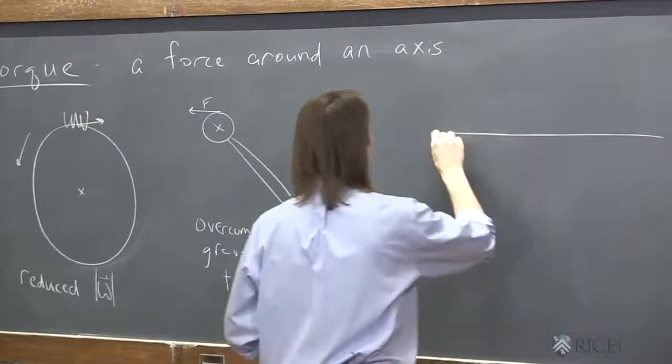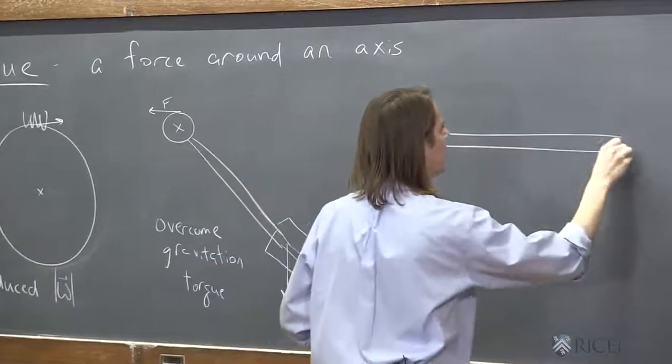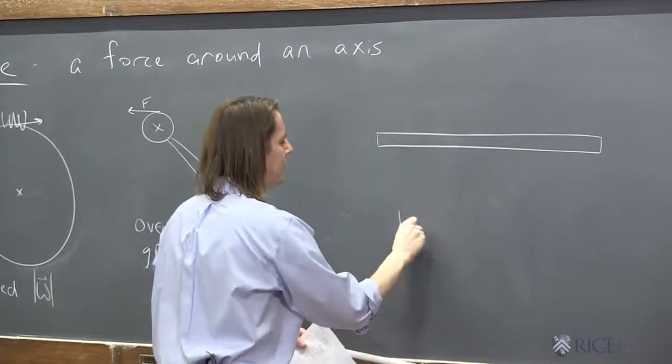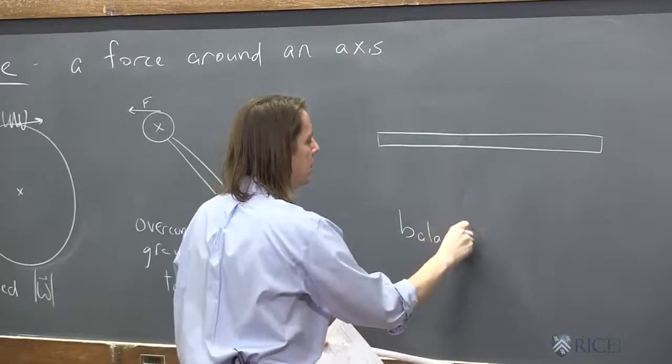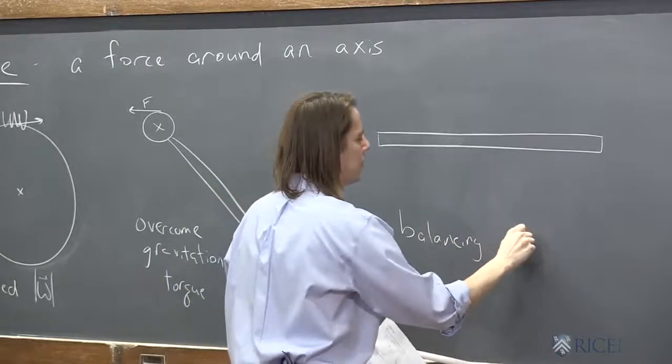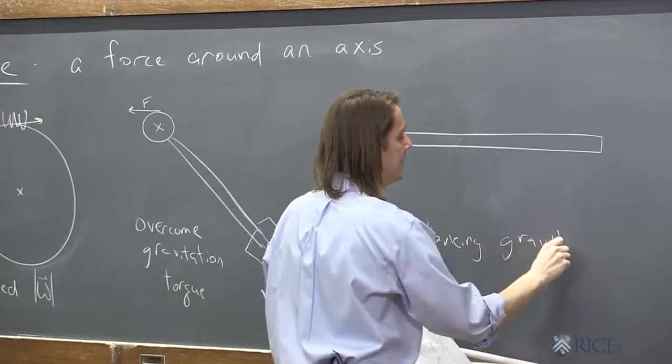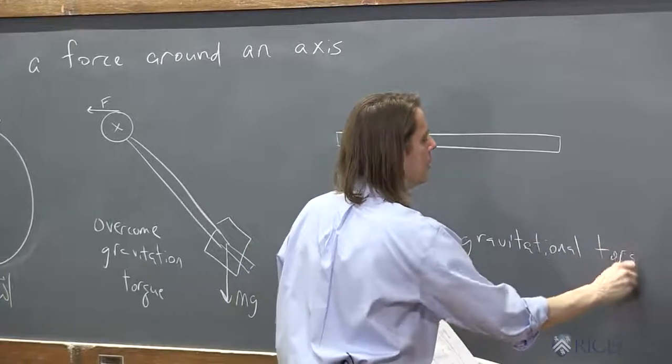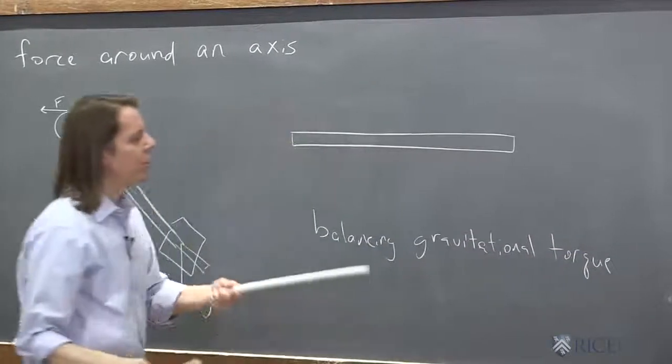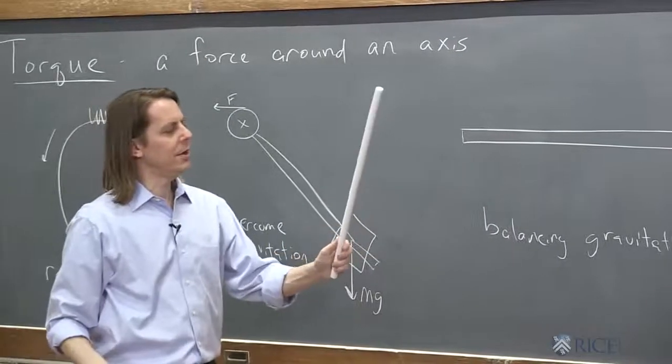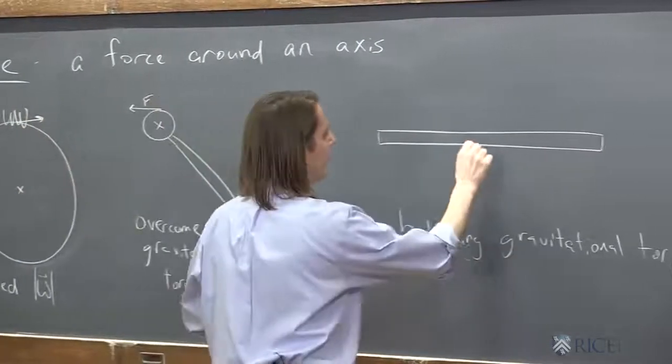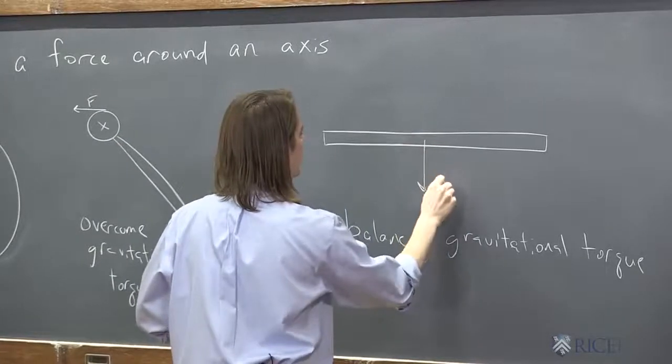So here's the rod, like that. And here what I'm doing is balancing the gravitational torque. Let's see if we can see it. Gravitational. Because we know that for an object like this rod, the force acts at the center of mass. And since it's uniform, the center of mass is in the middle.